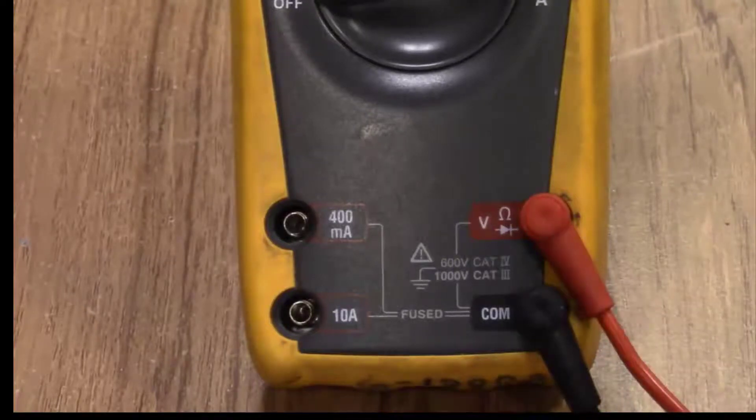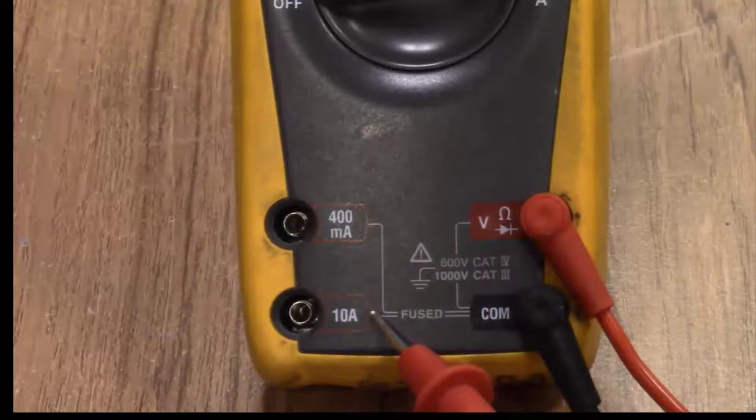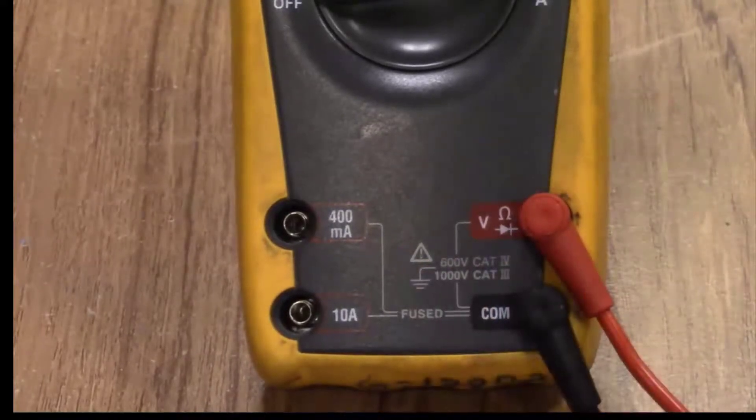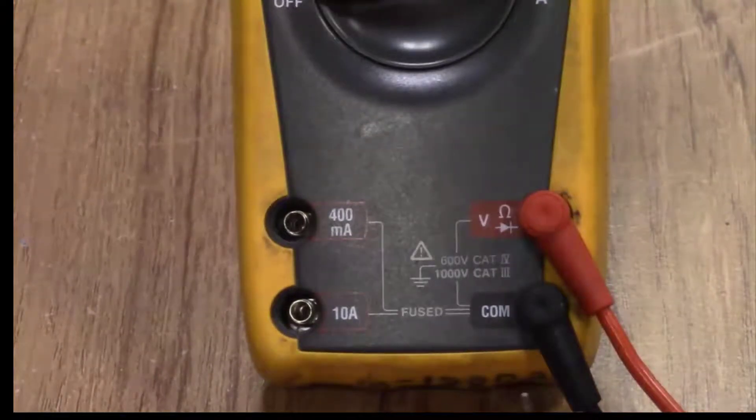If you have to do some sort of current reading you're going to choose either the 10 amp or the 400 milliamp jack spot for your red lead. You want to use the closest jack setting that you can use.